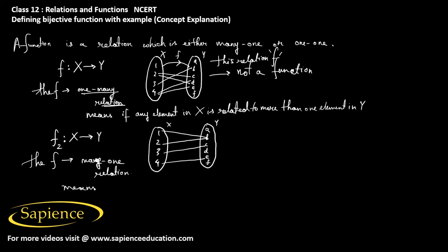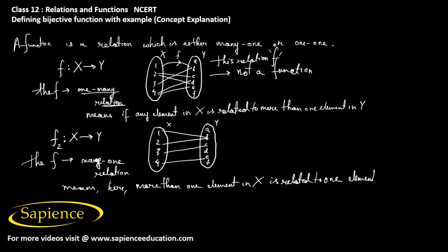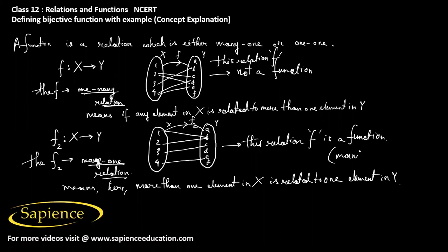A many-to-one relation means more than one element in X is related to a single element in Y. So this type of many-to-one relation is a function. So the relation f2 from X to Y is a function — in fact it is called a many-to-one function.